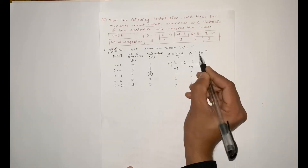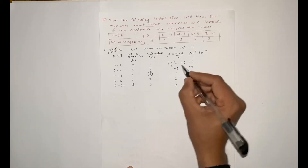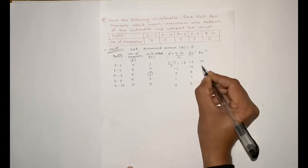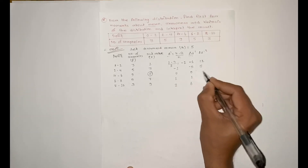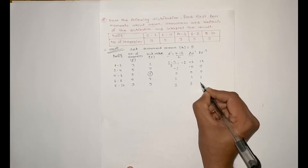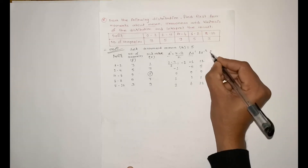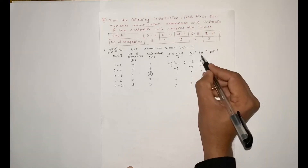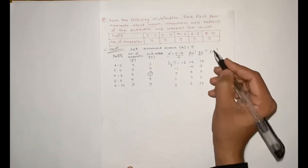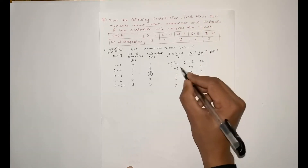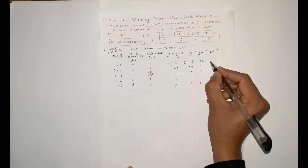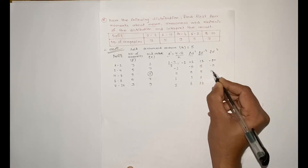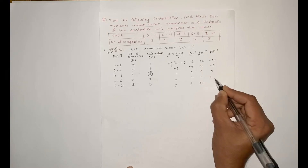For f·d-dash squared: (−2) × 6 = 12; (−1) × 5 = 5; 0; 1; 12. For f·d-dash cubed, we multiply f·d-dash squared by d-dash: (−2) × 12 = −24; (−1) × 5 = −5; 0; 1.